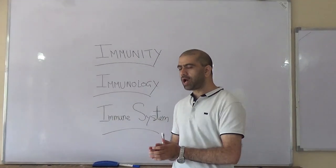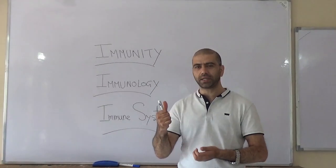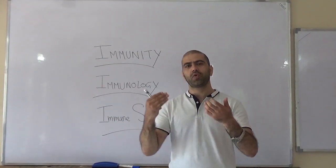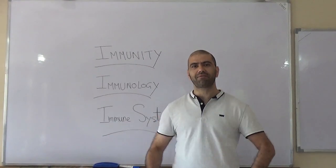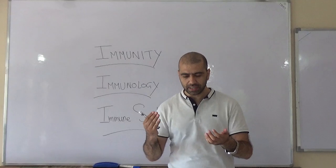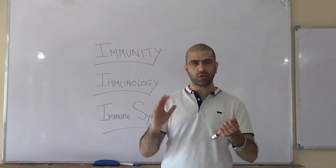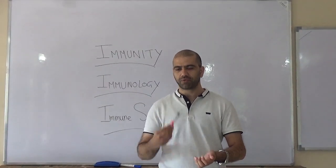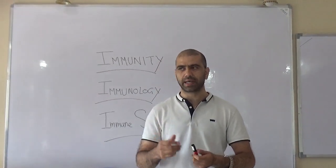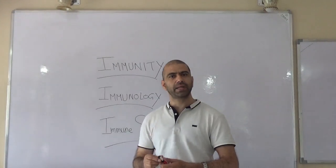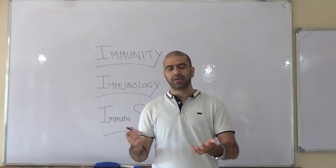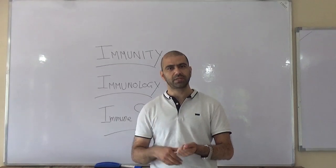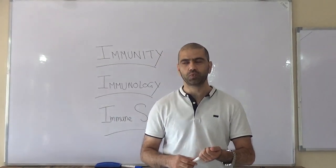You should always differentiate between two things: resistance and response — these are two different things. When you are attacked with a pathogen, consider your body as a fortress. The fortress has doors and windows. For example, if bacteria go inside via your mouth into the gastro tract, first your saliva contains lysozymes, acting as the first line of defense. Then it goes down your gut, where the pH — around 2 — takes care of it.